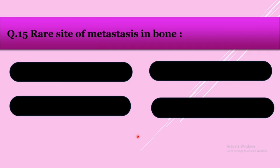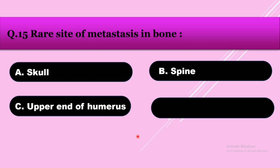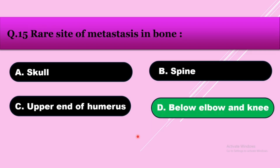Question number fifteen: The rare site of metastasis in bone — option A: skull, option B: spine, option C: upper end of humerus, option D: below elbow and knee. The answer is below elbow and knee.